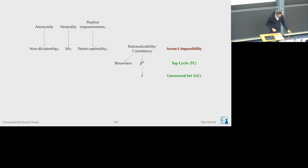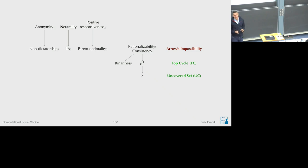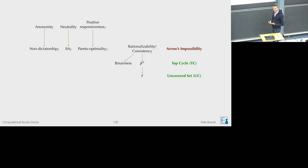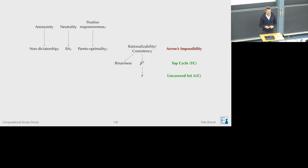Today we are digging deeper into the hierarchy of majoritarian social choice functions. We are on one of the escape routes from Arrow's impossibility, where we only take expansion consistency. The strongest expansion consistency condition beta-plus led to the top cycle, and the uncovered set was characterized as the finest majoritarian social choice function satisfying gamma. Today we discuss two more social choice functions by weakening expansion consistency further to conditions called rho-plus and rho: the bank set and the tournament equilibrium set.